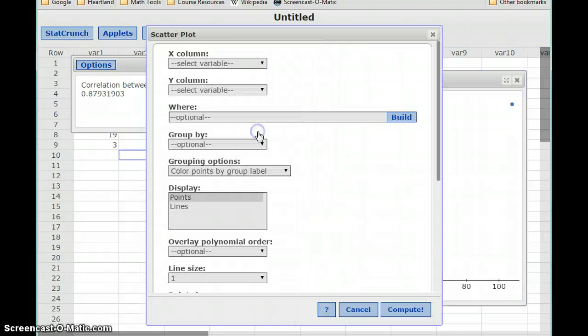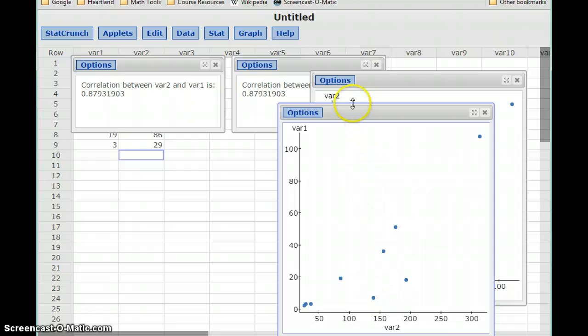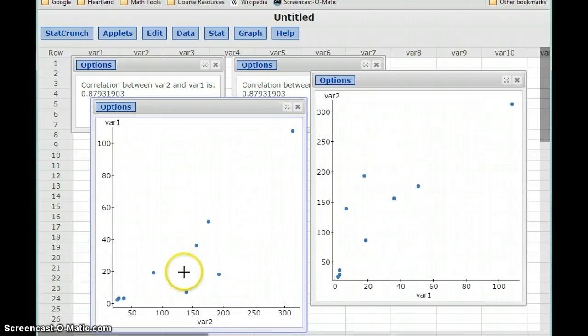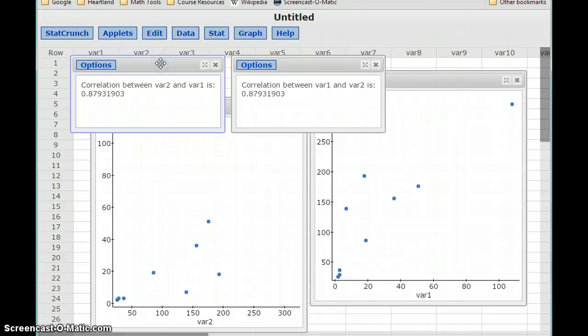So we'll create a scatter plot and switch those two variables around. What we can see here is the shape of the graph looks a little bit different. Just that pattern is sort of a mirror image of itself. So depending on the order that we put information into a scatter plot that can change the picture a little bit, but doesn't do anything to affect the strength of the association.